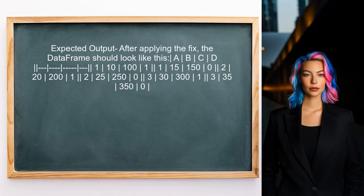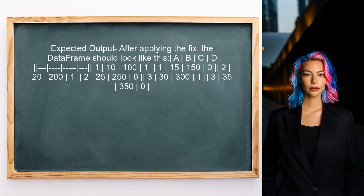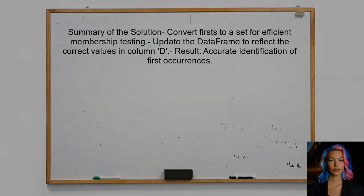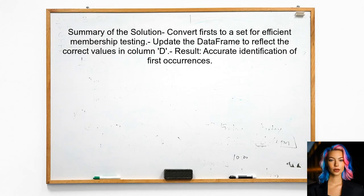Let's update the code accordingly. After making these changes, the user should see the correct output in column D, where it will show one for the first occurrences and zero for others. By converting the first series to a set, the user can efficiently check for membership and achieve the desired results in the new column.